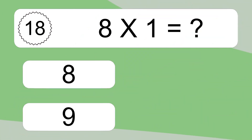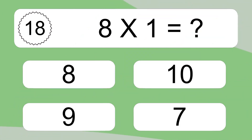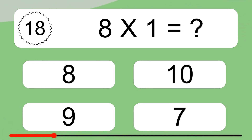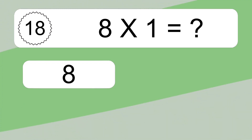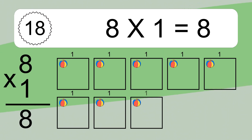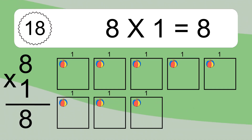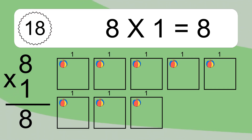8 times 1 equals what? 8 times 1 equals 8. We have 8 boxes and each box has 1 colorful ball inside. If you count all the balls in all the boxes together, you will have 8 times 1 balls. This equals 8 balls.